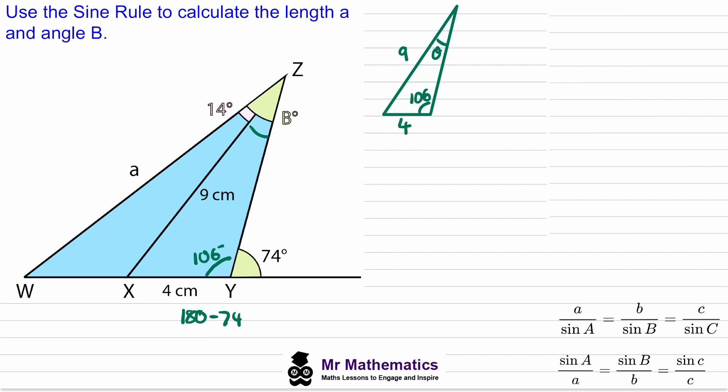So the idea is if we work out this angle theta then we can add this angle to this one which we told us 14 to work out the bigger angle WZY. So we need to work out theta and because we want to work out an angle we need to use the sine rule where the angles are the numerator.